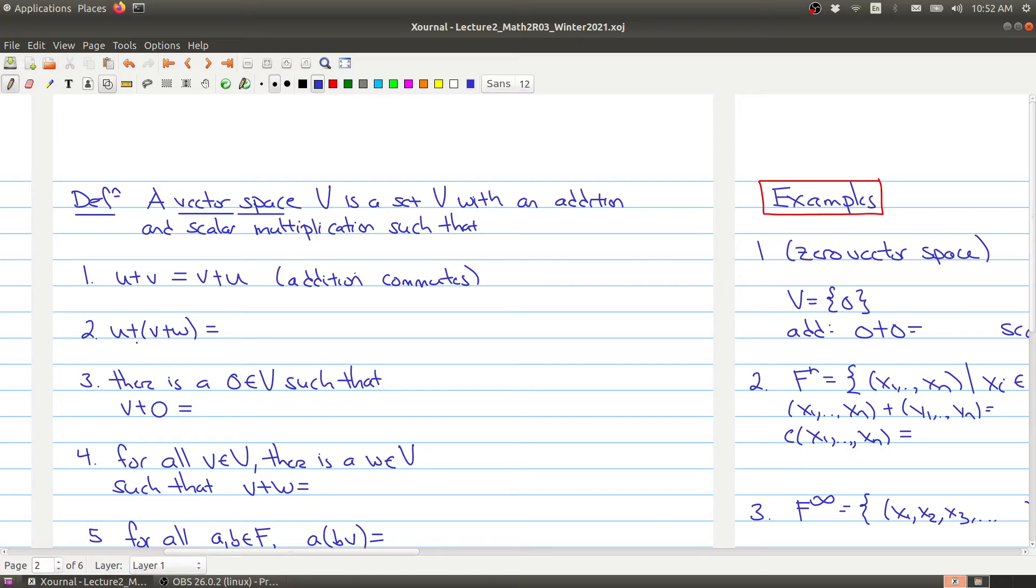We also have an associative property which says that if you want to add three things together, the order in which you add them together doesn't matter. You could first add V and W and then add U, or you could add U and V and then W. This is saying that addition is associative.